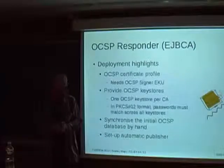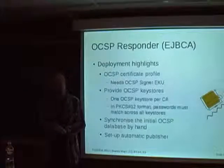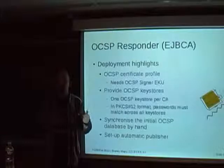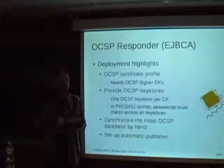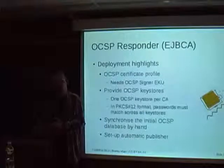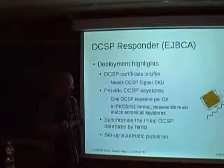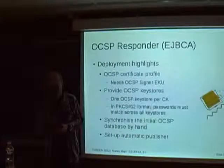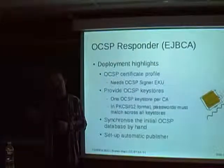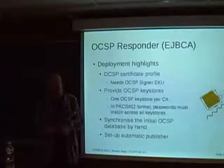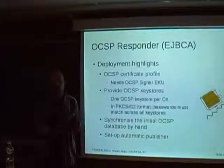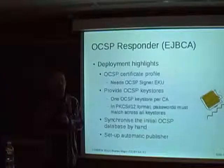You will also need to synchronize the initial OCSP database by hand. A part of the EJBCA certification authority database is kept at the OCSP responder — information about certificates and their validity is kept in unchanged form on the OCSP responder database. This manual synchronization includes dumping the database and importing it on another server. You will then need to set up an automatic publisher so that whenever a certificate gets revoked or issued, it is automatically pushed into the OCSP database. EJBCA supports publishing queues, so if publishing fails, services can periodically retry.